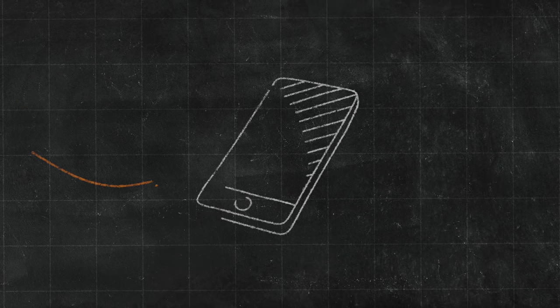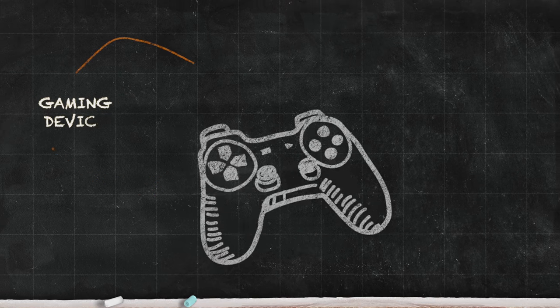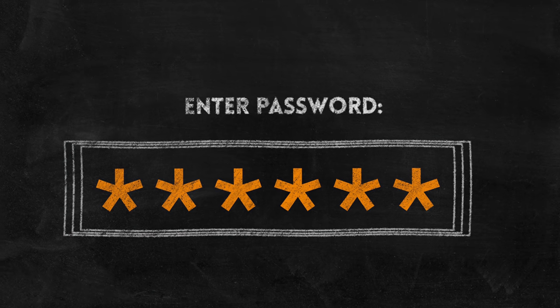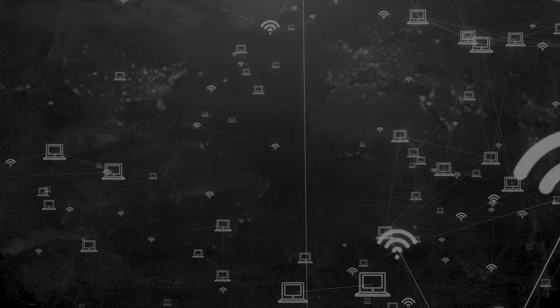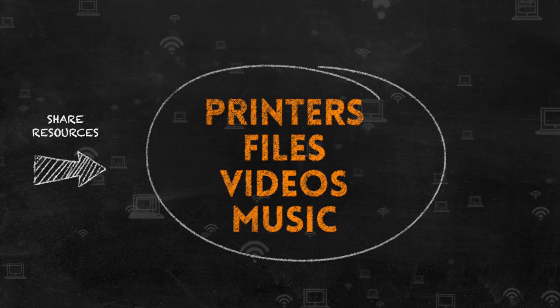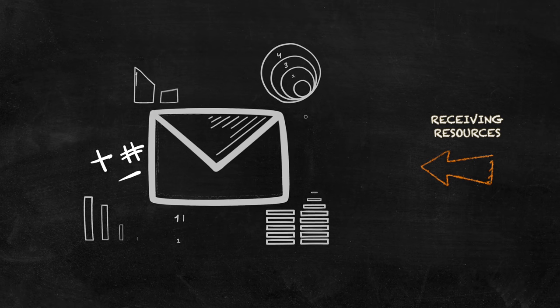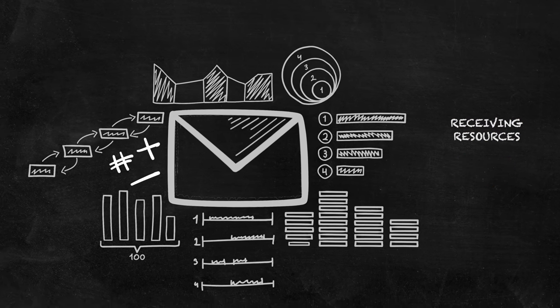That could be a mobile phone, a tablet, a personal computer, or a gaming device — that's assuming you remember all the passwords! The internet is one enormous network connecting millions of devices across the world, allowing us to share resources such as printers, files, videos, music, as well as applications and games. It's also important for receiving things such as email, and of course downloading all the latest news from McLaren.